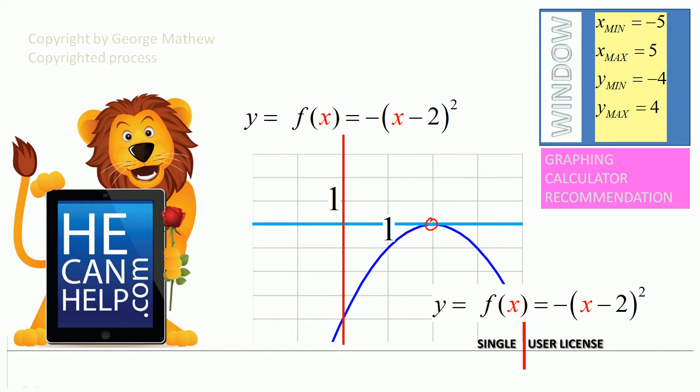Let's go ahead and plot it. The graph opens down. And x equals 2, y equals 0. And you see that it is not symmetric about the y-axis.